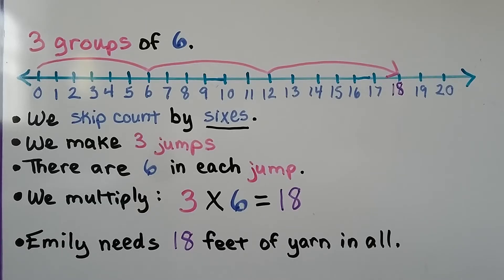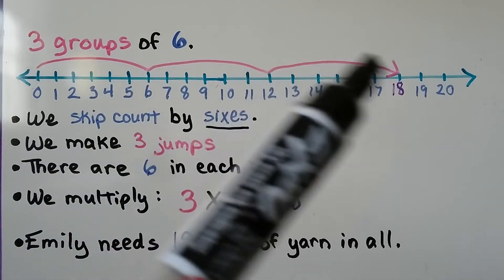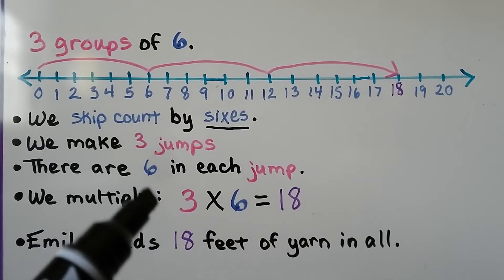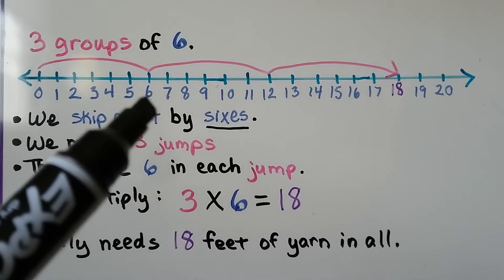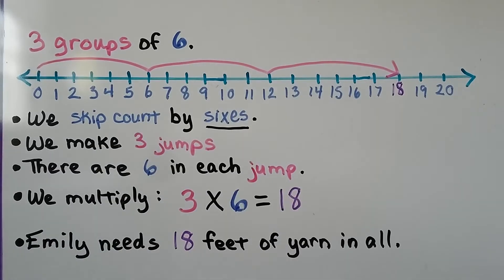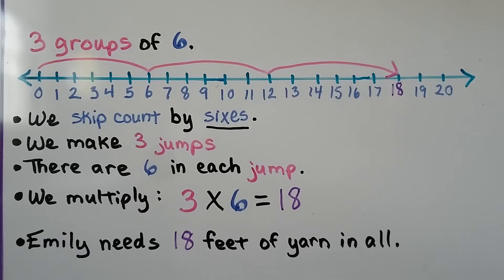We skip count by sixes. We need three groups of six, so we make three jumps — one, two, three — and there are six in each jump. So we jump to six, twelve, then eighteen. We can multiply: three times six is equal to eighteen. So Emily needs eighteen feet of yarn in all.